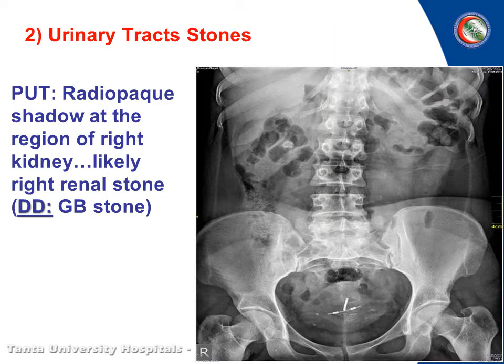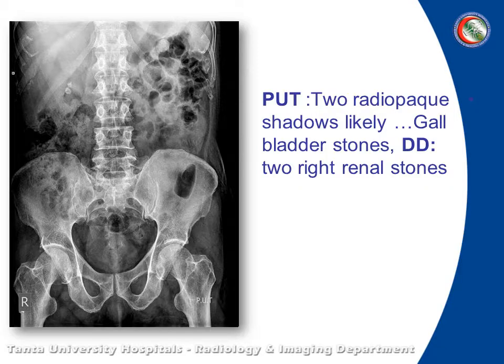In urinary tract stones, we depend on radio-opaque shadow on plain X-ray. Like this one — there is a radio-opaque shadow in the right hypochondrium, so it could be gallbladder stone or renal stone. In this image it is a renal stone with differential diagnosis of gallbladder stone. And this one is gallbladder stone — it is much higher than the previous one.